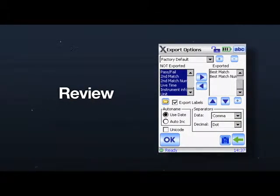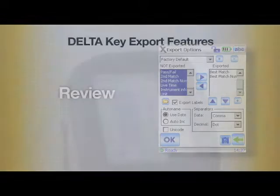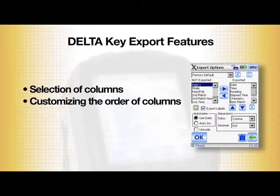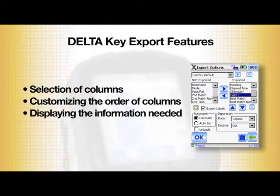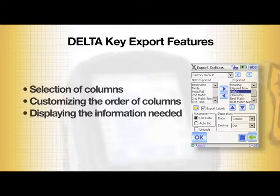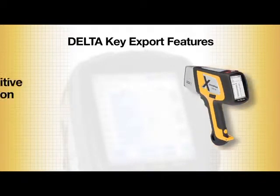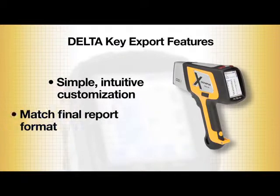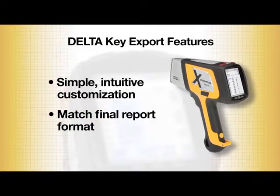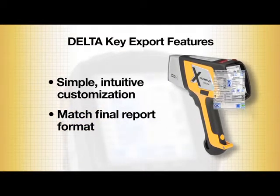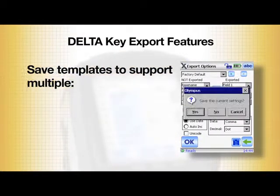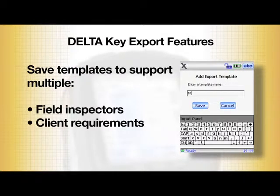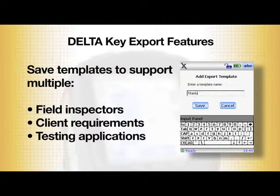To review, the key export features are selection of columns, customizing the order of columns, and displaying the information needed. Through simple intuitive customization, you can make your export results match your final report format. Save the template to support multiple field inspectors, client requirements, and testing applications.